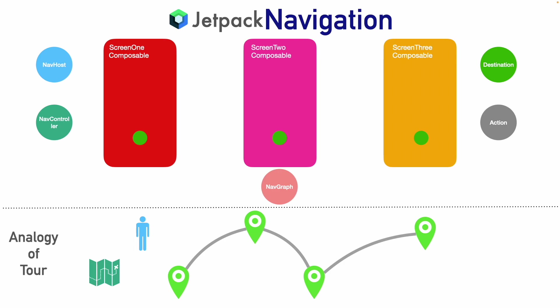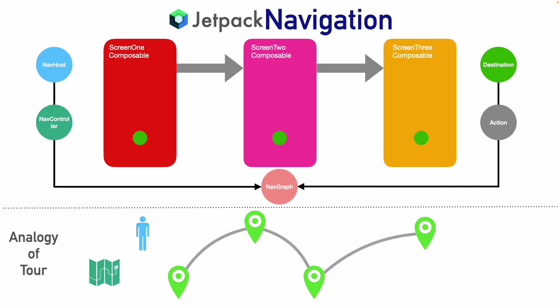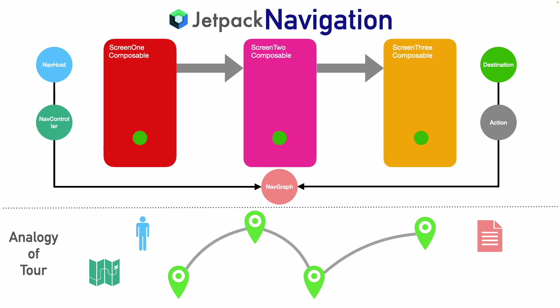Think of action as a route between the destinations. The nav host not only needs the map — the nav controller — to take you to the destination; he also needs to know the routes between the destinations. These routes or actions are basically the decisions which tell you where you want to navigate from one screen to another screen. And the one component which binds all these things — nav host, nav controller, destination and action — is the nav graph. Think of nav graph as a centralized itinerary which contains all the information about destinations, nav host, nav controller, and the routes. Everything is mentioned in this one centralized place called the nav graph.